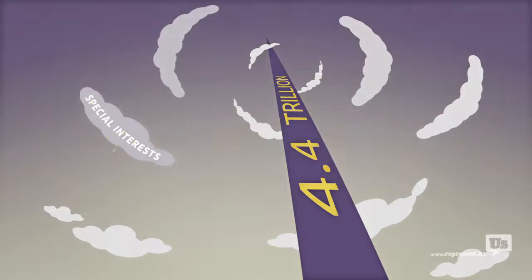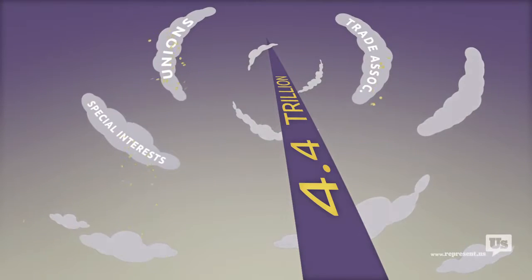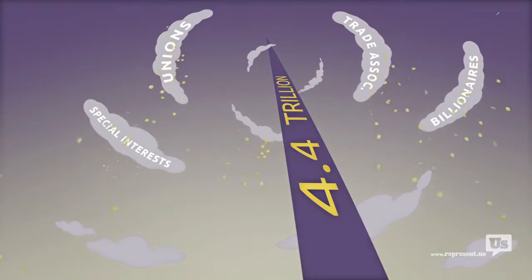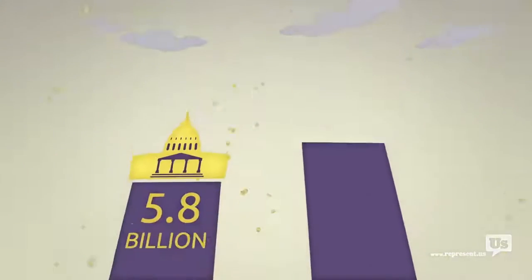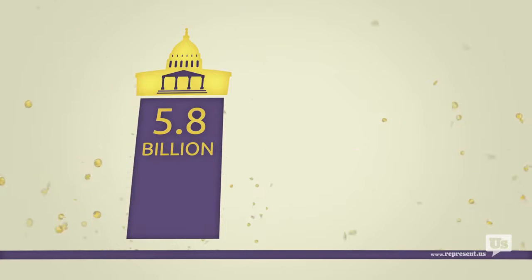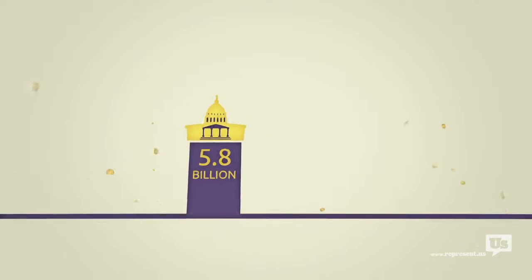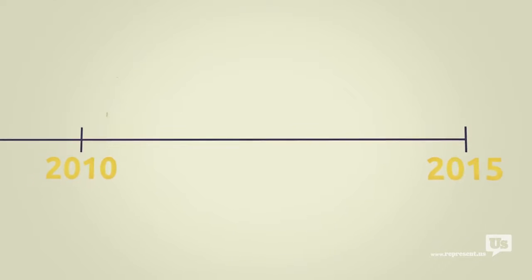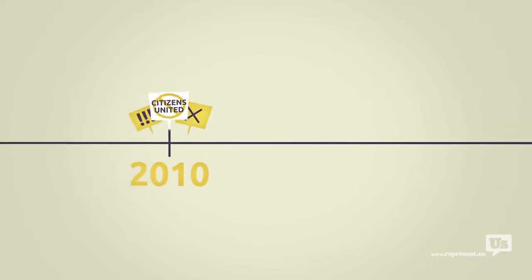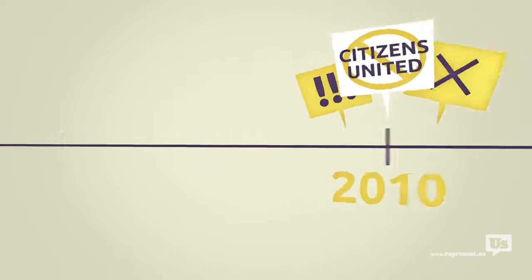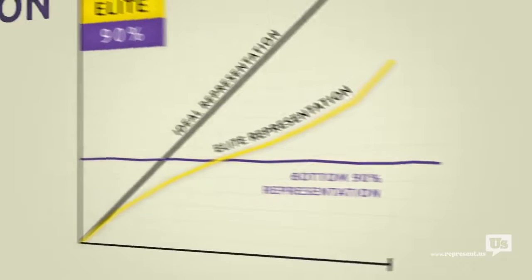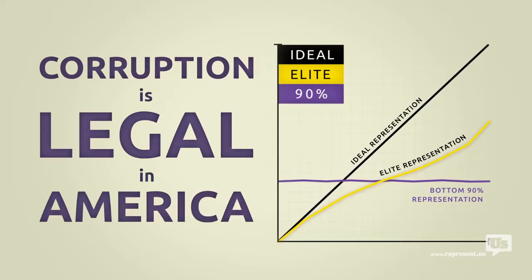Never mind every other special interest, every union, every trade association, and every billionaire. Every single one of them can use their money to buy political influence. You know there's this idea out there that this only became a problem after the Supreme Court's Citizens United decision in 2010, but the data goes back almost 40 years and the results are clear. Corruption is legal in America.